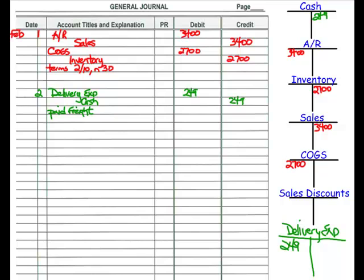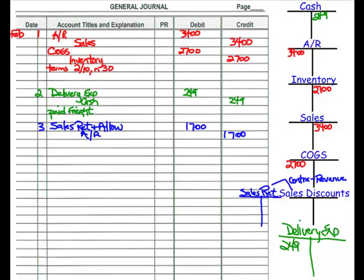On February 3rd, the customer from February 1st returned half of the amount they purchased because it was the incorrect product, and it was returned to inventory. So on the 3rd, we debit a new account called sales returns and allowances and credit accounts receivable for half the original amount, which is $1,700. The other half of this transaction records the goods coming back into inventory: we debit inventory and credit cost of goods sold for $1,350, which is half the cost of the goods originally sold.